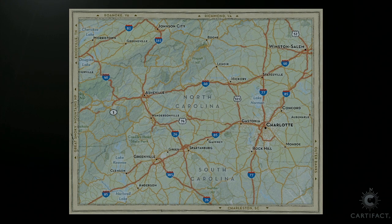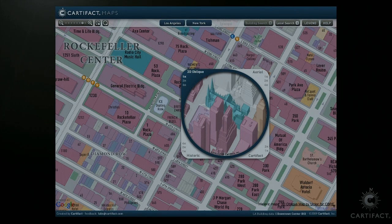With intelligence and communication in both directions, maps can respond without the user having to push a button to see traffic or weather. Map tools can also reveal other hidden information — in this case, we're using our lens tool to show the 3D buildings within Manhattan.